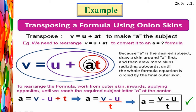Using the transposing method, we finally get A = (V minus U) / T. Here U, V, T are transposed from LHS to RHS or RHS to LHS. Finally we get A = (V - U) / T. This is the transposing method.